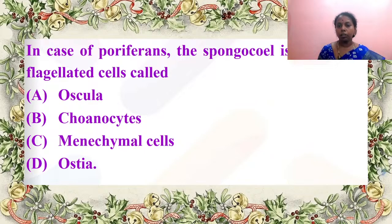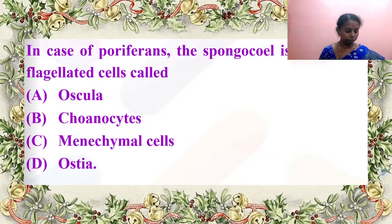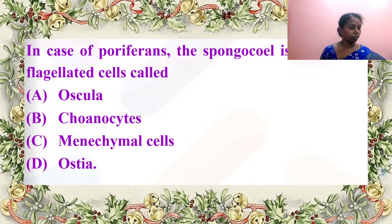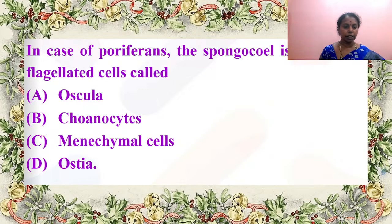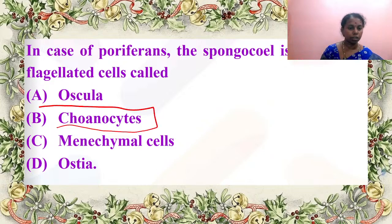In case of Porifera, the spongocoel is lined with flagellated cells called what — is it oscula, choanocytes, mesenchymal cells, or ostia? It is choanocytes — the flagellated cells exclusively found in Porifera — very correct answer.